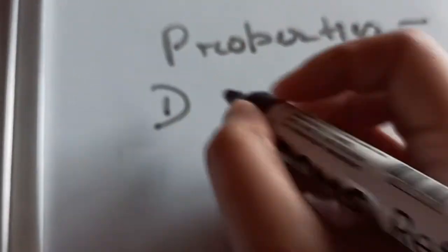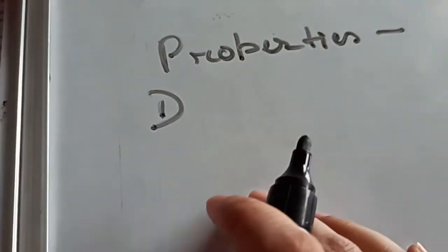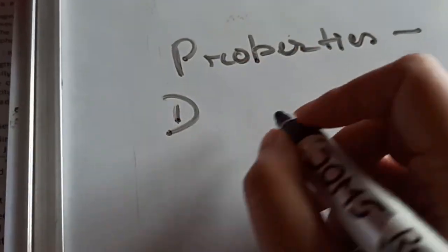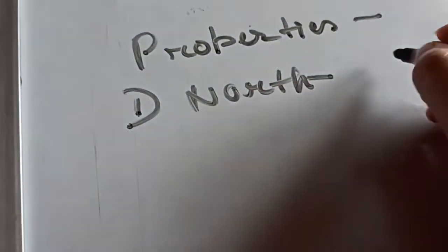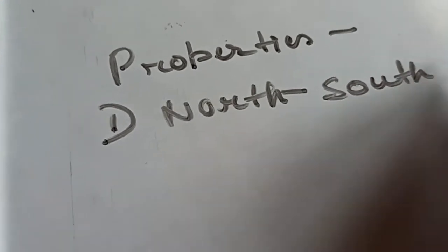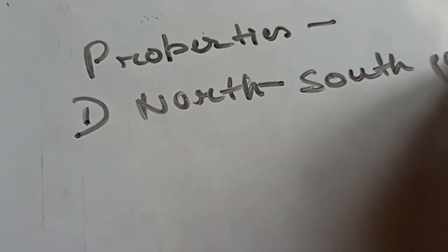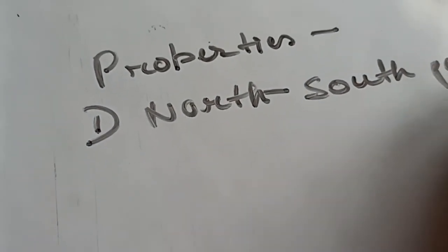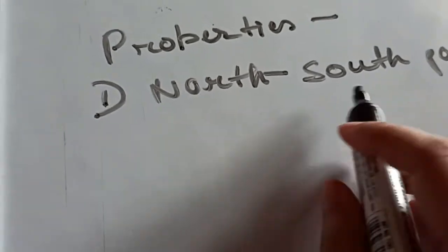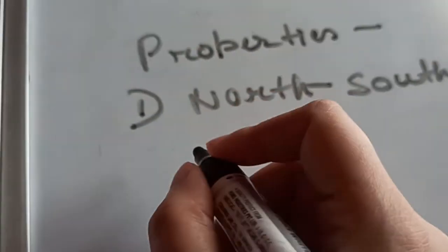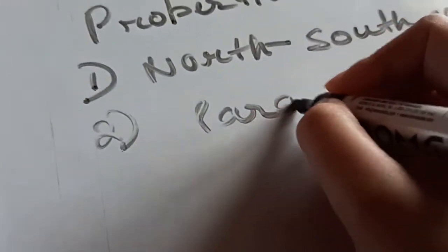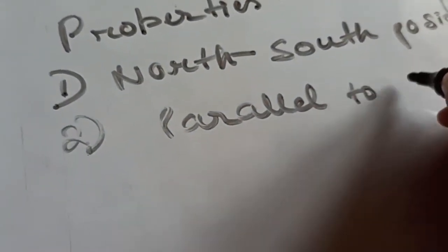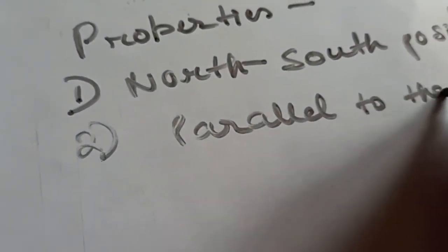Number one: properties of the latitude is that latitudes are present in the north-south position, or in other words, the latitude runs in the north-south direction. Next is that all the latitudes are parallel to the equator.